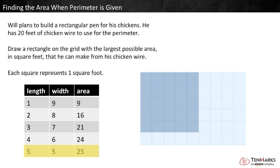That's the largest possible area with a perimeter of 20. In this video, you learned to find the area of a rectangle when you know its perimeter. Thanks for watching!